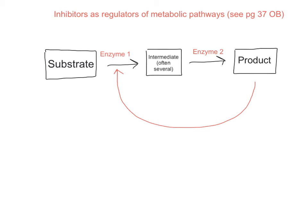What happens is they use something called a negative feedback loop to basically enable them to control the amount of product that they make. As you can see in this example, the final product of this particular metabolic pathway is actually able to inhibit enzyme number one, or the first enzyme in the chain.